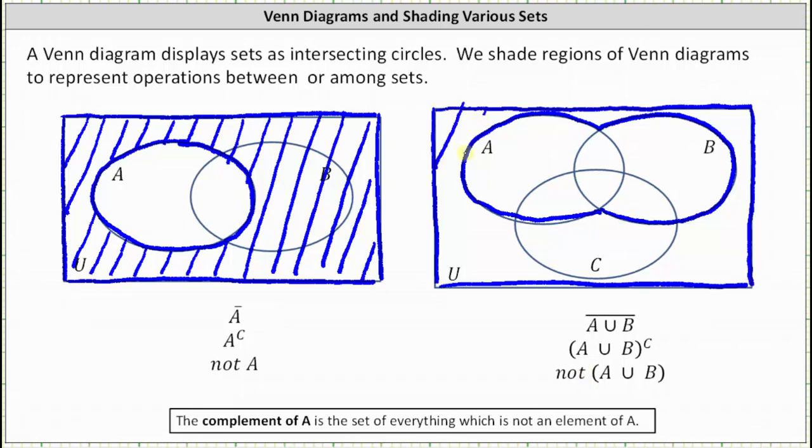This shaded region represents the set containing all the elements that are not in A or B. This shaded region is the complement of A union B.